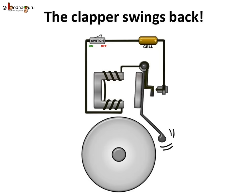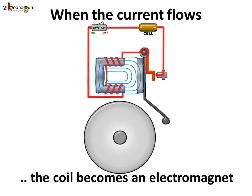The clapper springs away from the bell back to its original position and touches the contact screw again. This completes the circuit.